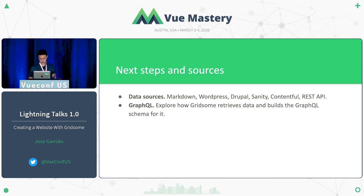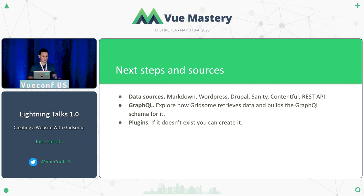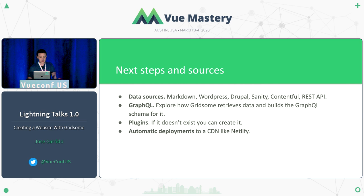There are a lot of plugins available, and if one doesn't exist, you can create it. For example, it's very easy to create a Cloudinary plugin to use with Gridsome. It's also very easy to automate deployments — you can deploy on push and the site will be automatically published for you.